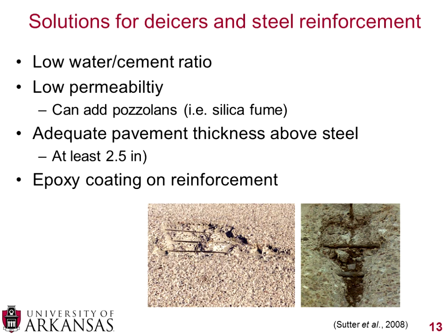Solutions for steel reinforcement protection include a lower water-to-cement ratio to reduce permeability, adequate pavement thickness above the steel — at least 2.5 inches minimum — to limit moisture penetration. Epoxy coating on the reinforcement provides extra protection, though it is more expensive.